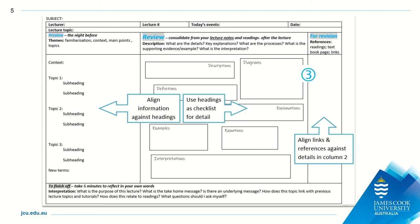The way you arrange this information should suit your learning style. For example, you may align text against the topic headers, or you may choose to organise information by type as suggested by the information boxes in the guide. It is likely the lecture detail will run over several pages, so just keep expanding this space as needed.